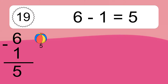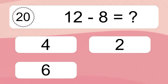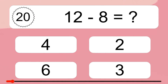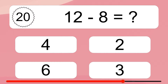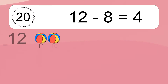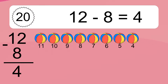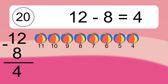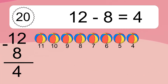Let's count it. 12 minus 8 equals what? 12 minus 8 equals 4. Let's count it. 11, 10, 9, 8, 7, 6, 5, 4.